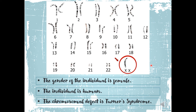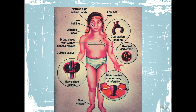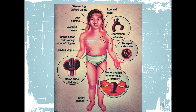Again, the normal number of chromosomes in humans is 46 — there are 23 pairs. If you total all of them, it becomes only 45, so there is indeed a chromosomal defect. Image of Turner's syndrome.